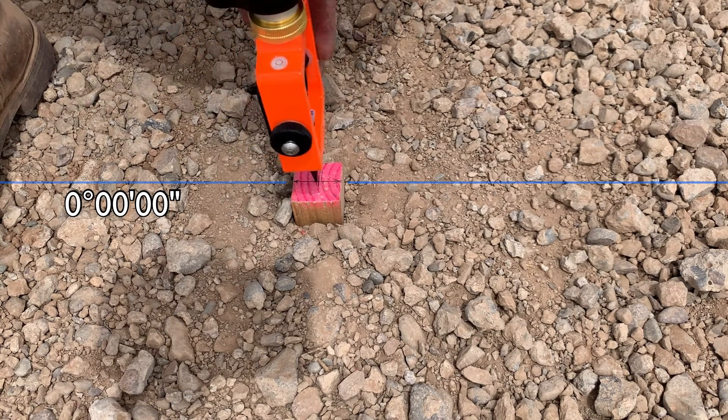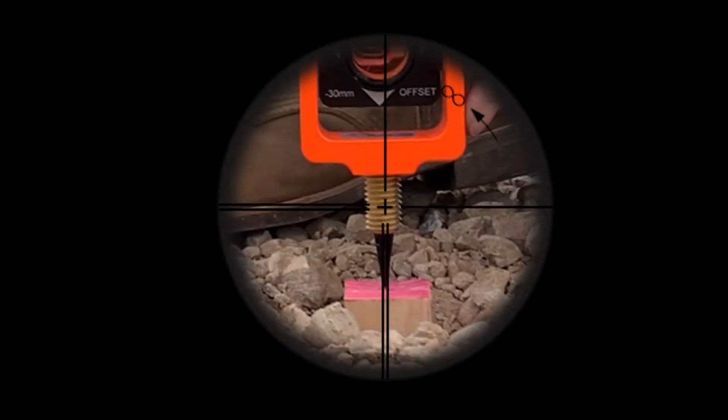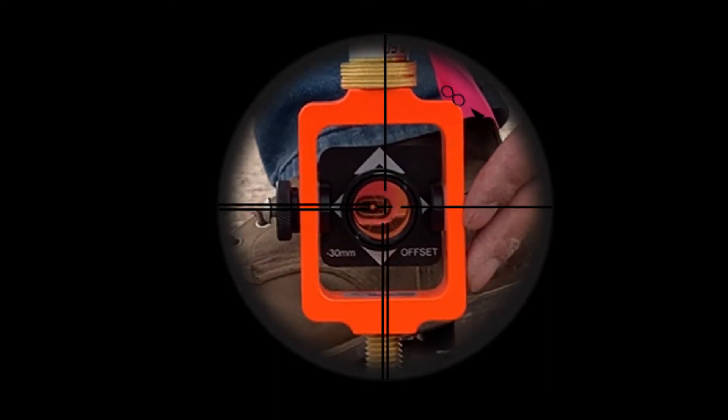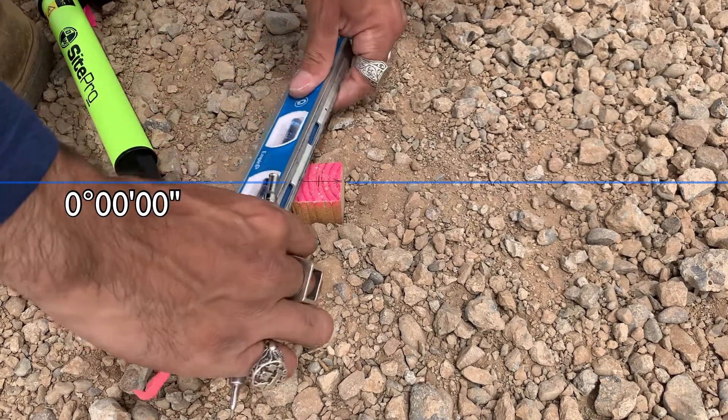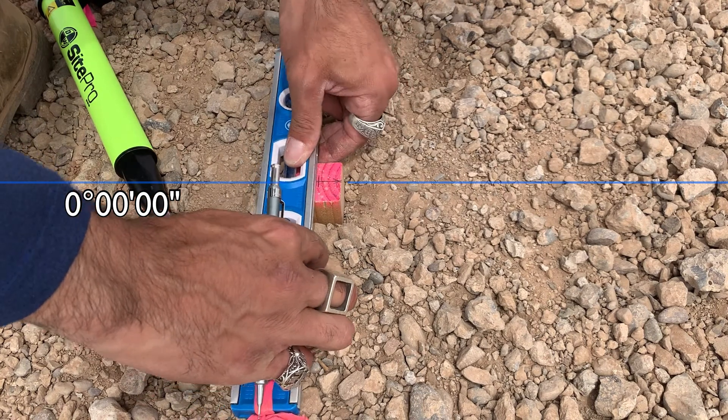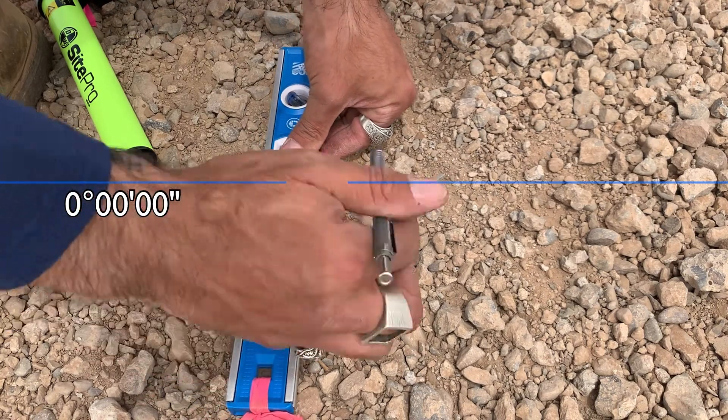We'll take another set of measurements for distance, again shooting for better than five thousandths, and transferring that distance to the hub using another mark perpendicular to our baseline.